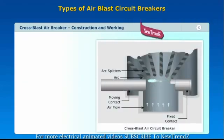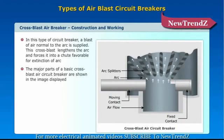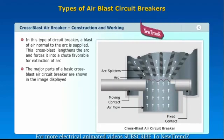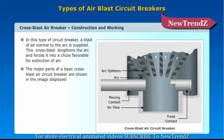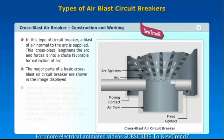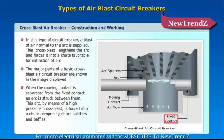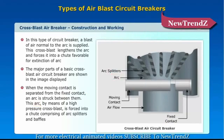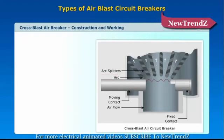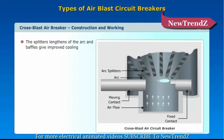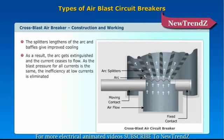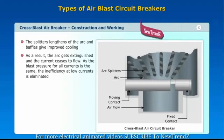Cross blast air breaker construction and working. In this type of circuit breaker, a blast of air normal to the arc is supplied. This cross blast lengthens the arc and forces it into a chute favorable for extinction of the arc. The major parts of a basic cross blast air circuit breaker are shown in the image. When the moving contact is separated from the fixed contact, an arc is struck between them. This arc, by means of a high pressure cross blast, is forced into a chute comprising arc splitters and baffles. The splitters lengthen the arc and baffles give improved cooling.